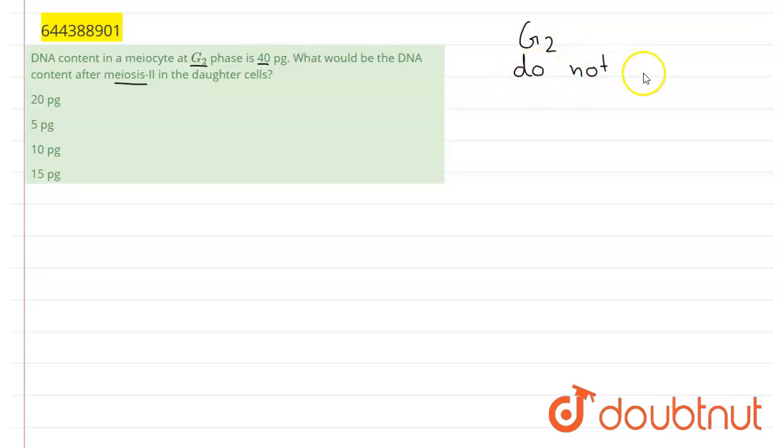This stage is before the cell division stage occurs, and here the cells prepare for the division stage but they do not divide. So the DNA content that is present here is that of the original parent cell. In G2 it is 40 picograms.